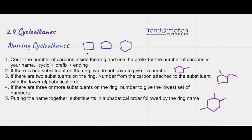For example, this ring has one, two, three, four carbons, so it will be cyclobutane. 'Cyclo' meaning that it's a ring, and 'butane' identifies that there are four carbons inside this ring.